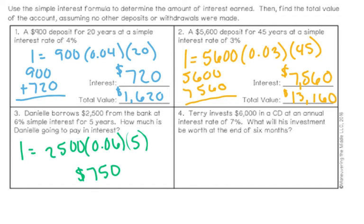If we wanted to figure out the total amount she's paying back, she has to pay back the $2,500 as well, so we would add $2,500 plus the interest of $750.